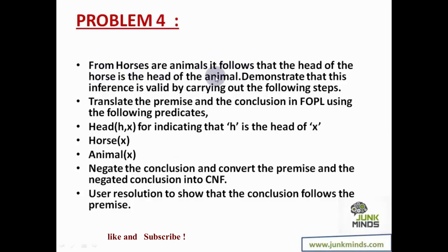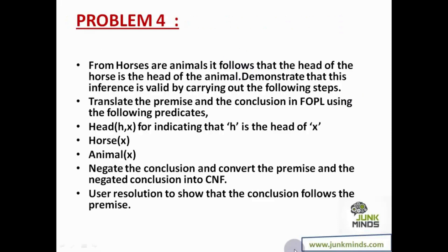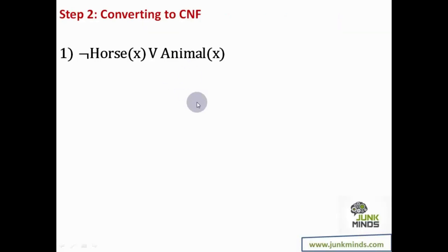What it means is that the information I have is that horses are animals, and from that I can conclude that the head of the horse is the head of the animal. Now if I try to represent this in predicate logic, I have just one piece of information: if X is a horse then X is also an animal. It's mandatory to use the given predicates. So in step one, converting to CNF: not horse(X) or animal(X).